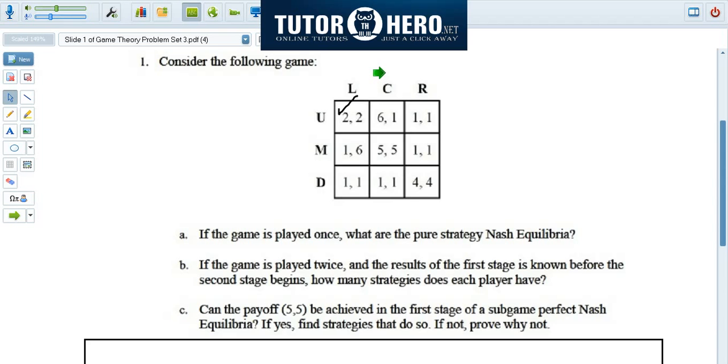Now we ask ourselves, what if the column player had chosen center? For the row player, again, we ask which is best. Well, six is good. Five is worse than six, and one is worse than five or six. So six is the best. If the column player chose center, the row player would choose up.